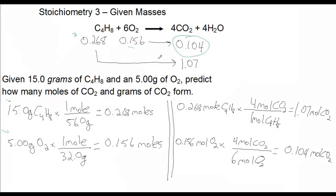And then I test each one of these reactants. I wrote over here, first, C4H8, multiply that by 4. I get 1.07. Then I multiply the 0.156 by 4/6 and it's 0.104. So, I select the lesser amount. So, my answer is 0.104 moles of CO2. And if you multiply 0.104 moles times 44, you should end up with 4.58 grams of CO2.